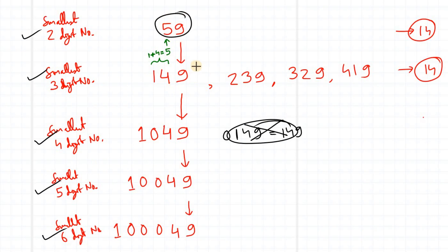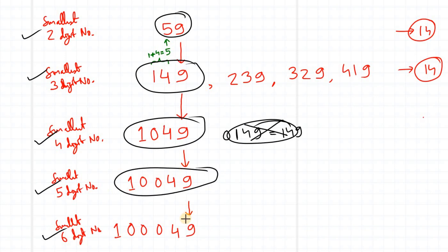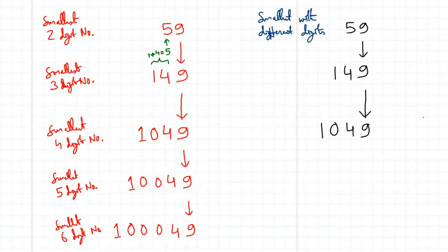So this is how I have built up the smallest numbers. The pattern is: smallest 2-digit is 59, smallest 3-digit is 149, smallest 4-digit is 1049, smallest 5-digit is 10049. Now let us consider the same questions but with no repetition among digits.